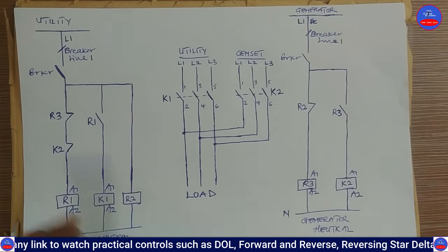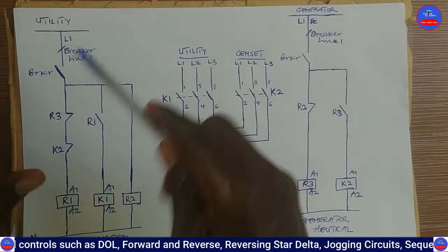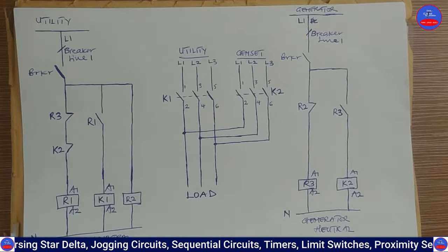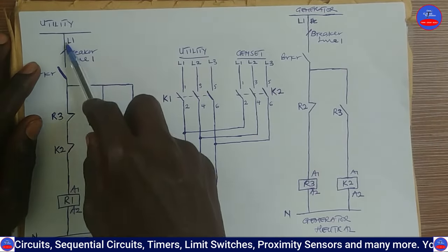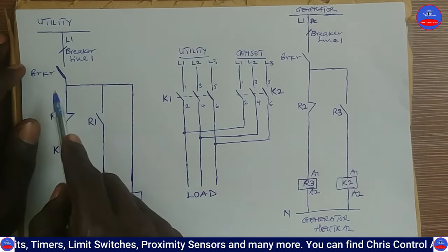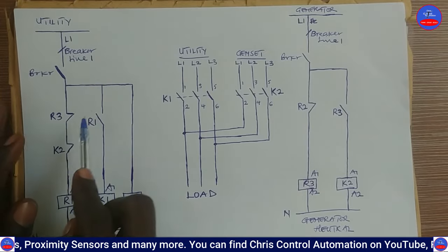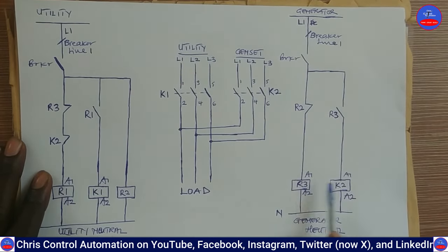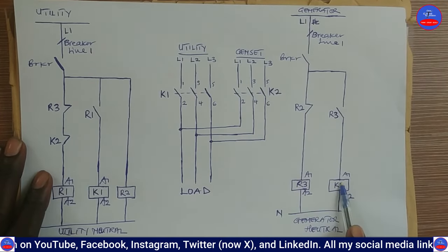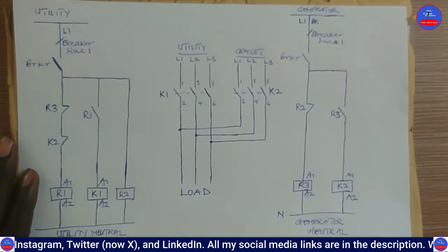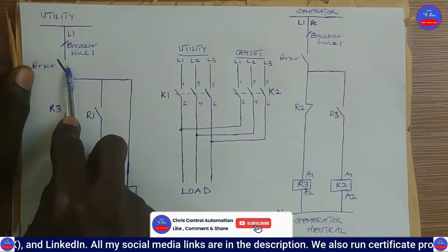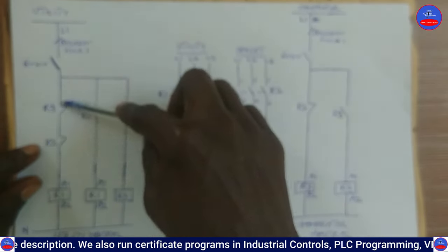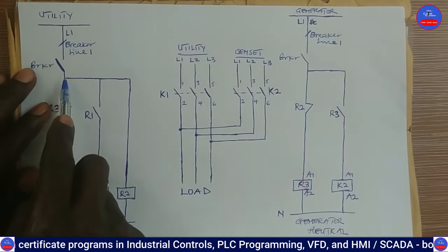Now, assuming we are operating on the generator and the main utility power comes back, the generator power will go off. Before closing the utility breaker, note that while the generator is on, R3 and K2 are energized and their contacts on the utility control side are open. So when you close the utility breaker, current cannot flow through those open contacts — it finds its way through R2 instead.